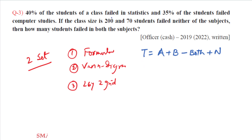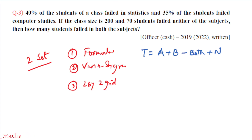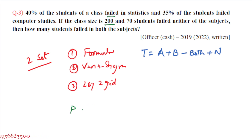40% of students failed statistics, so 60% passed statistics. Out of 200 students, those who passed statistics equals 60% of 200, which is 120. Similarly, 35% failed computer studies, so 65% passed computer studies. Passed in computer studies equals 65% of 200, which is 130.